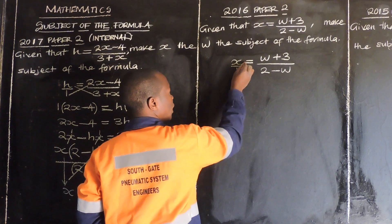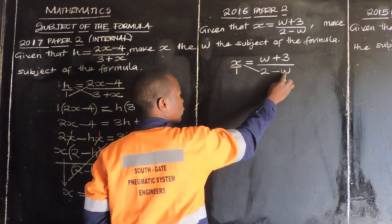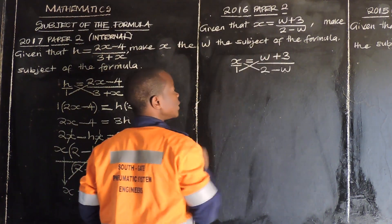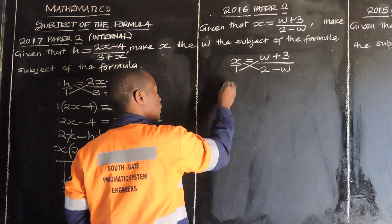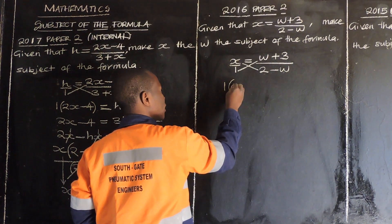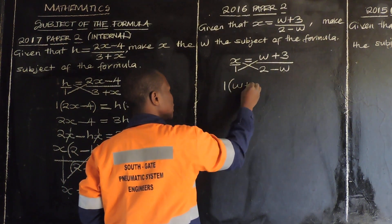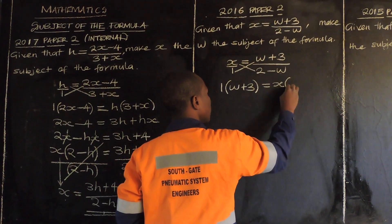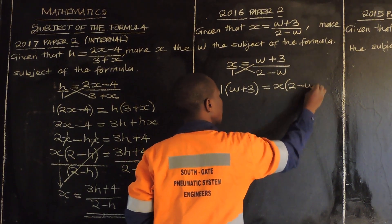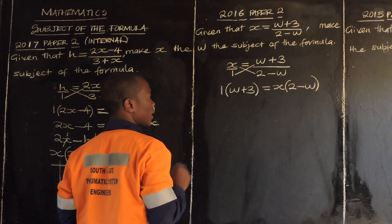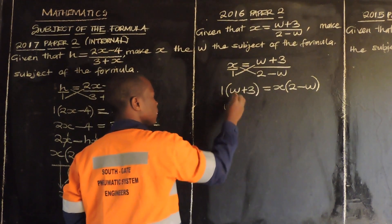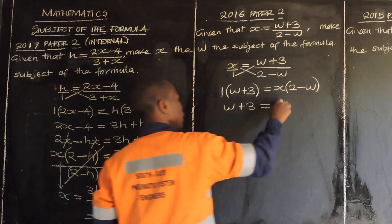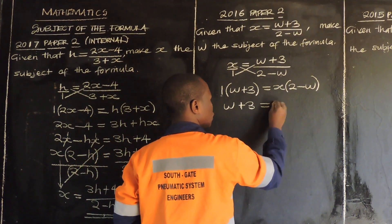Meaning we are going to multiply x multiplied by 2 minus w, then multiply 1 multiplied by w plus 3. So 1 times w gives w, plus 1 times 3 gives 3, is equal to x times 2 gives 2x.